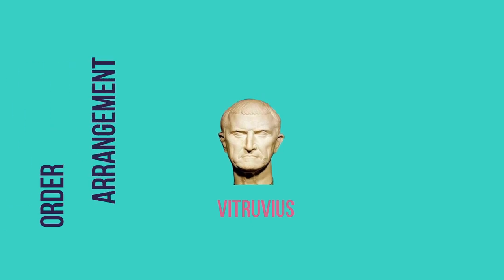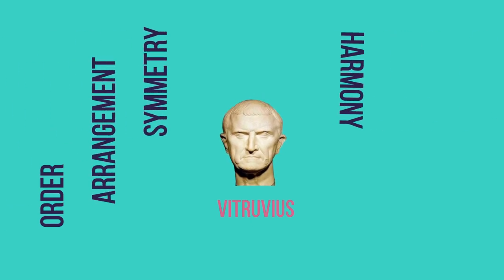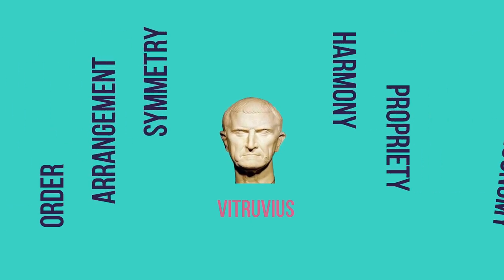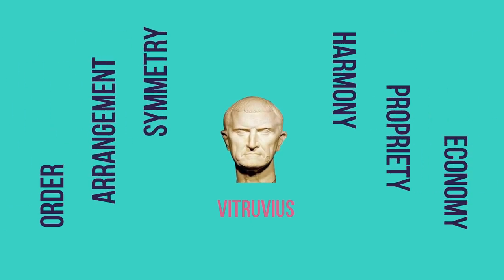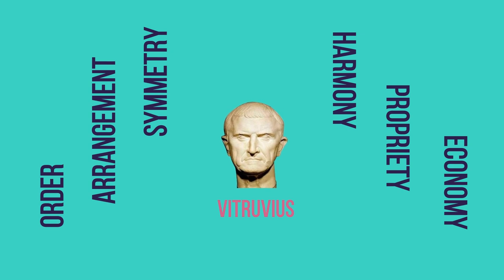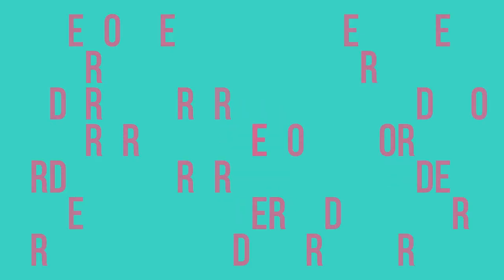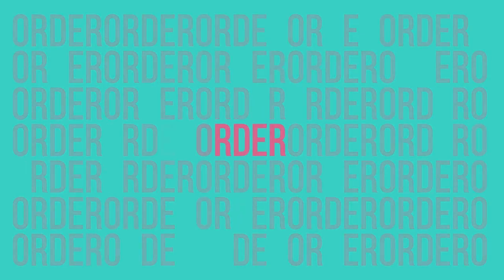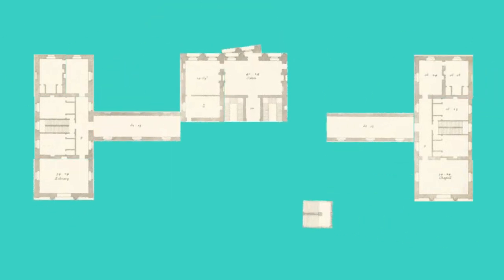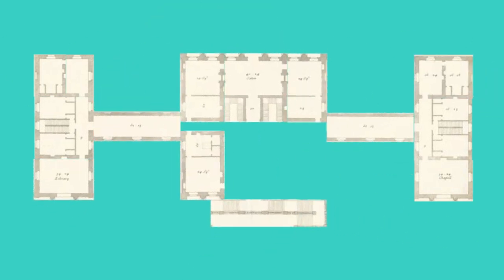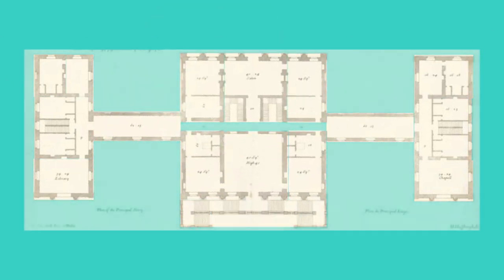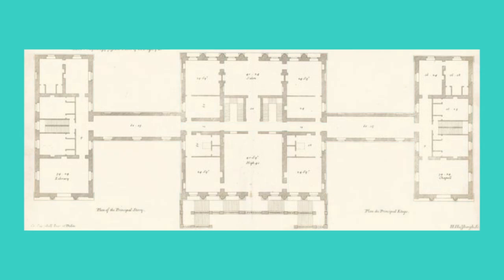Vitruvius believed that architecture depends on six principles, each with its own weight and value on the projects. The first one is order. He considered that a building is made out of small parts or modules, where the selection of these modules will give the building order and proper form.